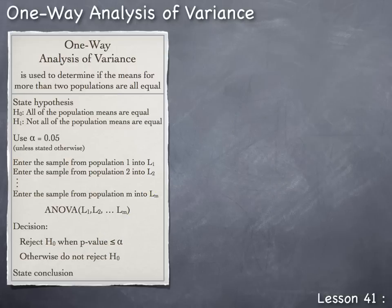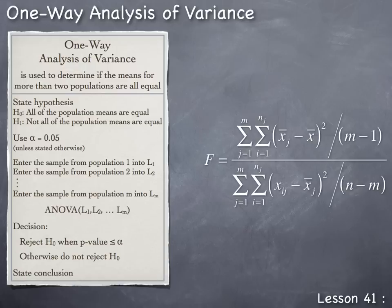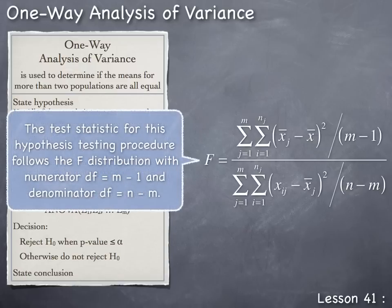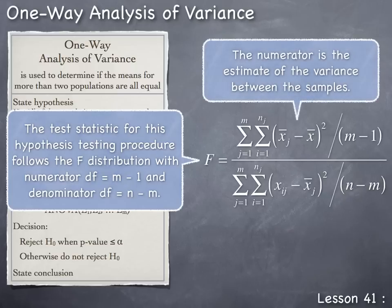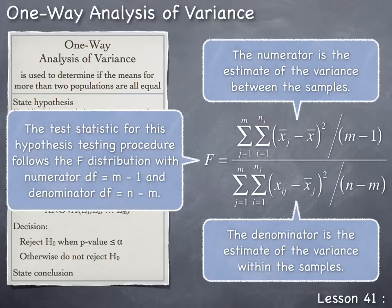The formula programmed into the TI-84 calculator's ANOVA command is given here. The test statistic follows the F distribution with numerator degrees of freedom of m − 1 and denominator degrees of freedom of n − m. The numerator is the estimate of variance between the samples; the denominator is the estimate of variance within the samples. If H₀ is valid and all means are equal, then the x̄ⱼ's all equal the overall mean x̄, making x̄ⱼ − x̄ = 0. Thus, small values of F are consistent with H₀ that all population means are equal.